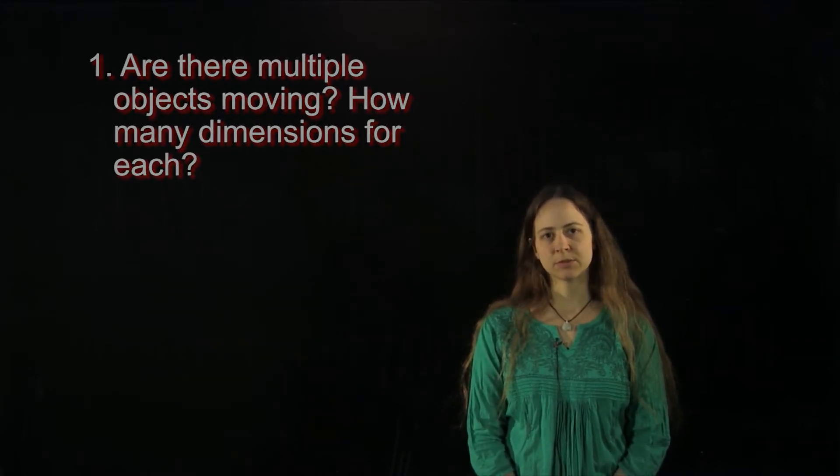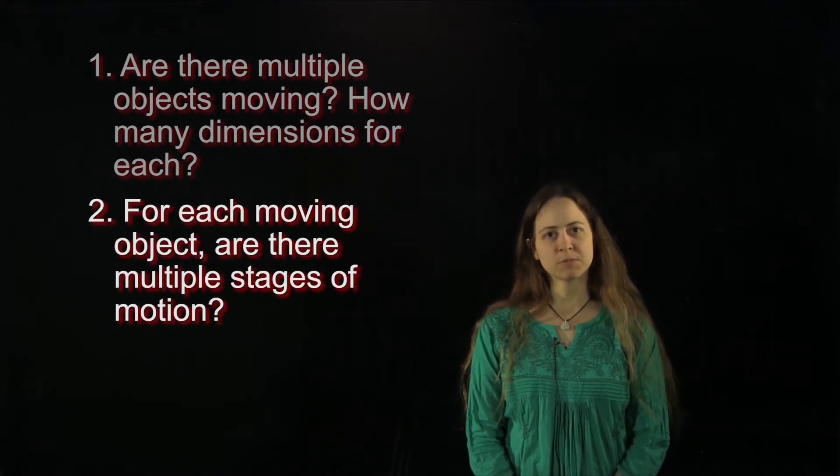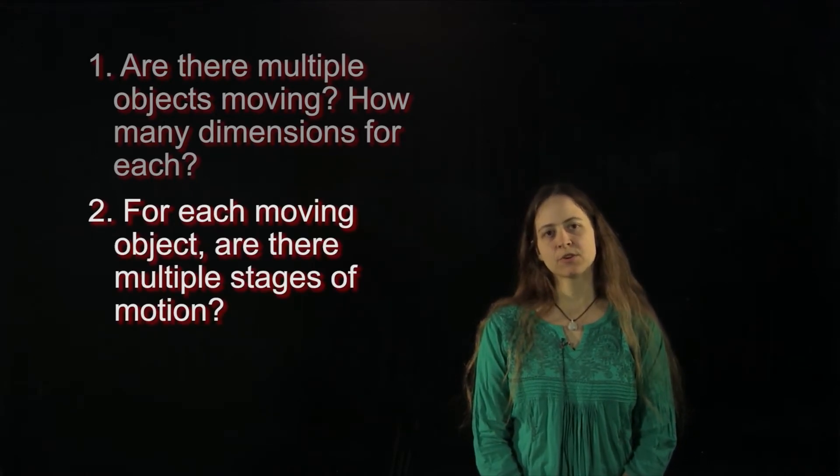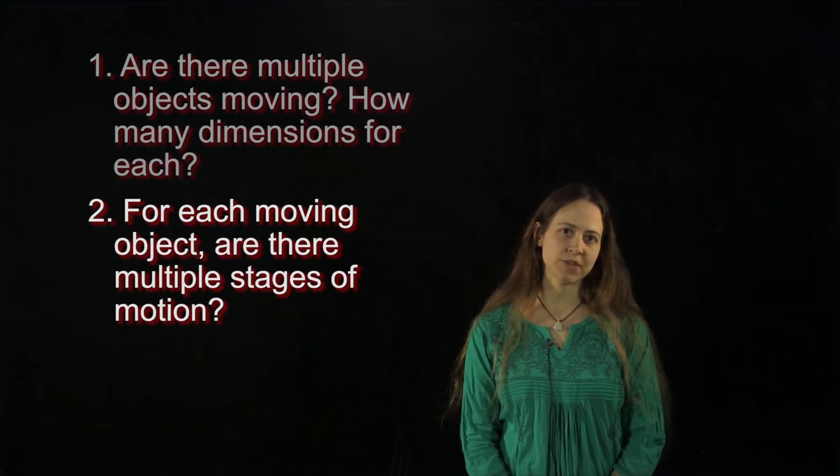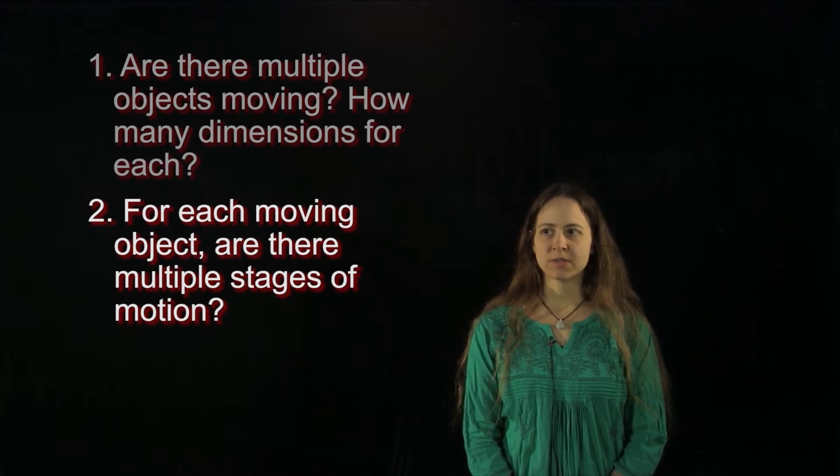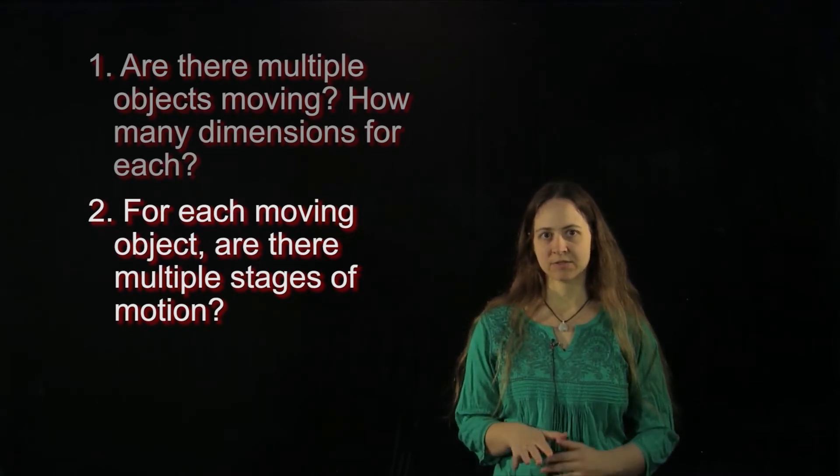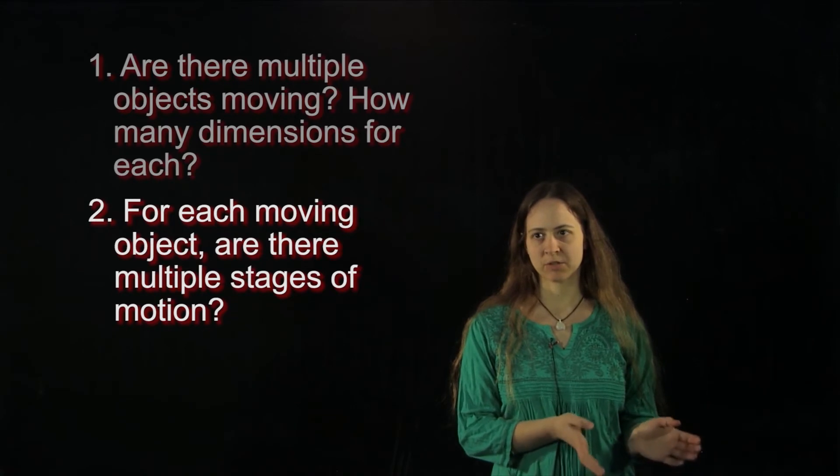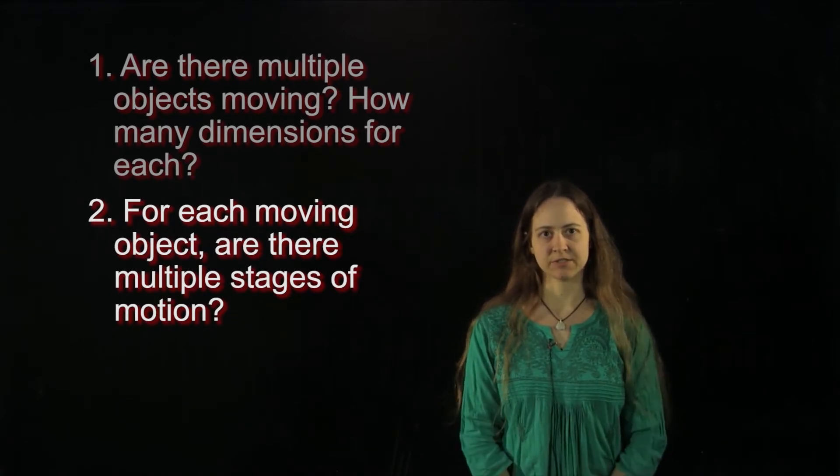The second question we want to ask is: how many stages of motion does each object have? For example, if you're told that a bicycle is initially accelerating and then at a certain time stops accelerating, you know that initial acceleration will have different equations of motion than the point where acceleration equals zero.